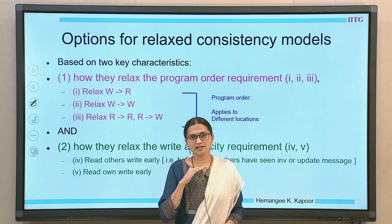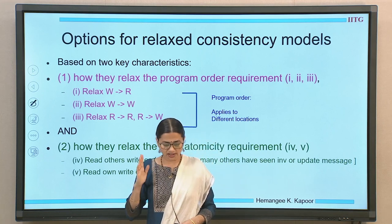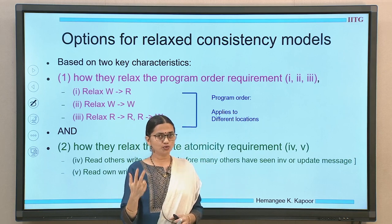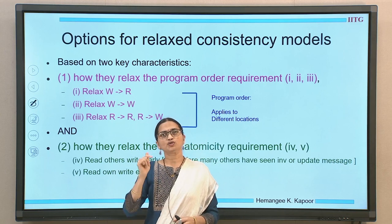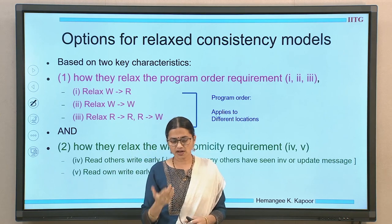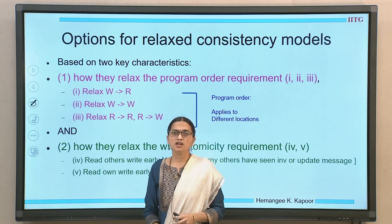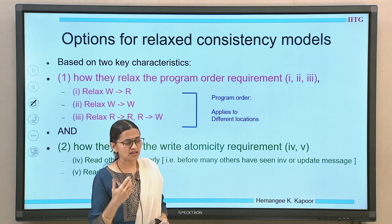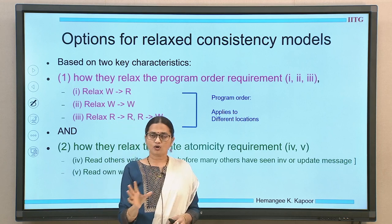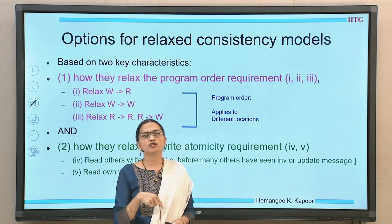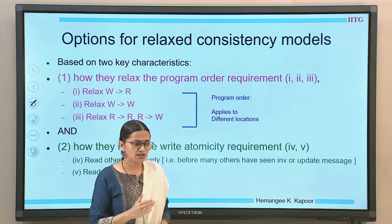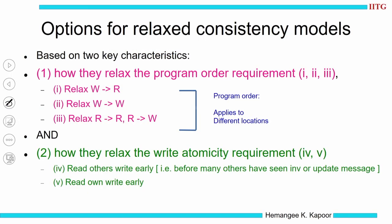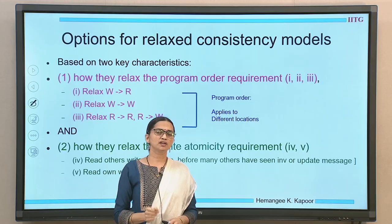At the end of the day, sequential consistency must be met. Sequential consistency requires preserving program order and atomicity — these two requirements. When I am relaxing, I want to relax one or both of these. Program order means maintaining read and write ordering — we have four orderings: write followed by read, read followed by write, and all four possible combinations. Which of these four combinations I am going to relax will decide my newer consistency model.